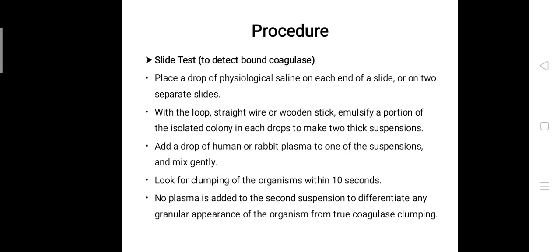The next step is you have to look for clumping of the organism within 10 seconds. But remember, you should not observe for more than 10 seconds because it may give you a false positive result. No plasma is added to the second suspension. This is to differentiate any granular appearance of the organism from true coagulase clumping.